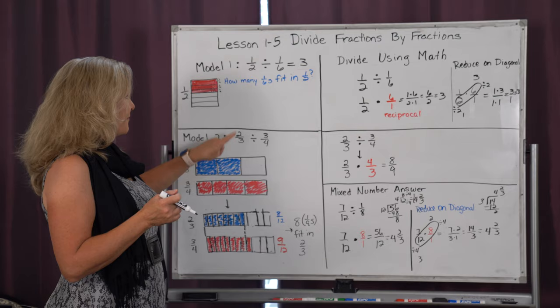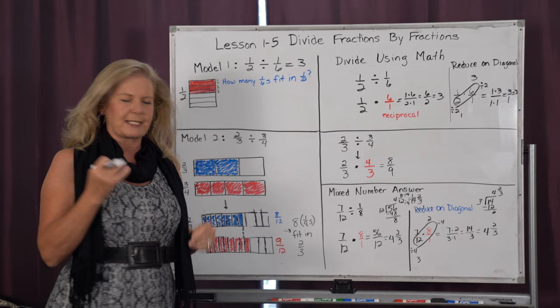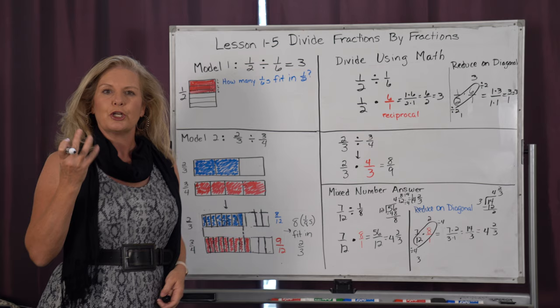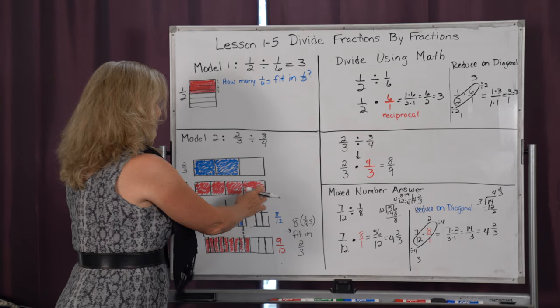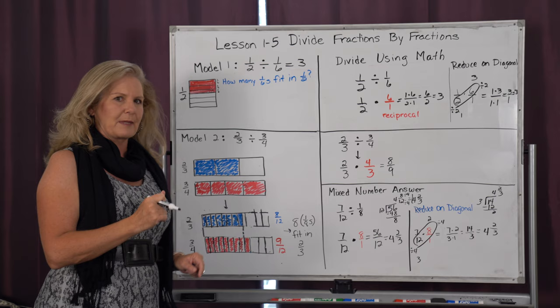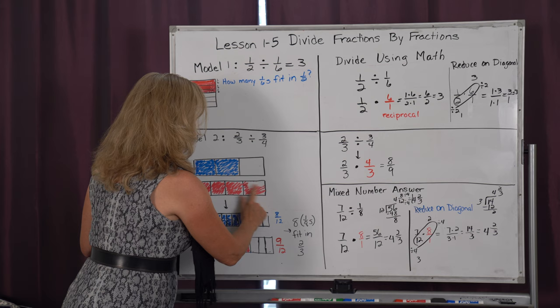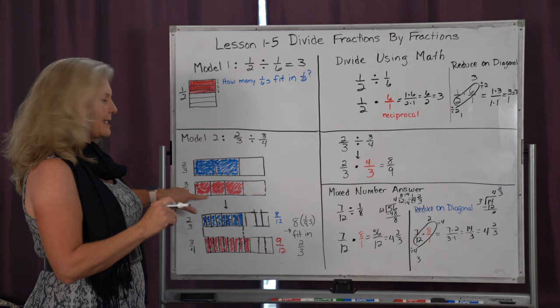So what I'm going to do in this model is draw a bar and break it into three equal sections for my denominator, and color two of those three to represent two-thirds. Then I'm going to take a second bar that's exactly the same size — notice the length is the same — and this time break it into four equal pieces for the denominator: one, two, three, four, of which I want to color in three. The numerator is how much I color; the denominator is how many pieces.